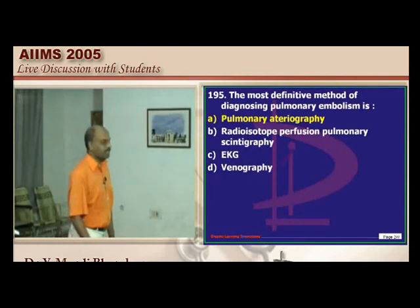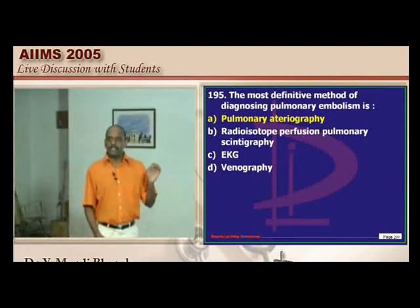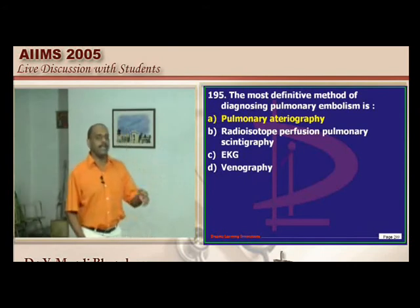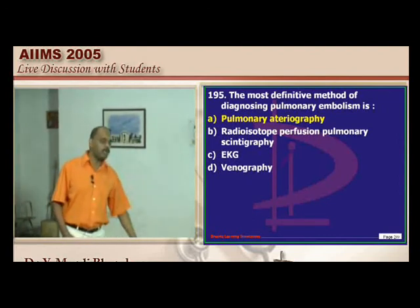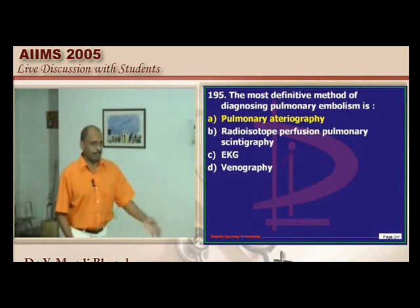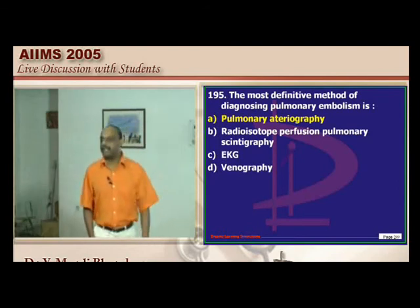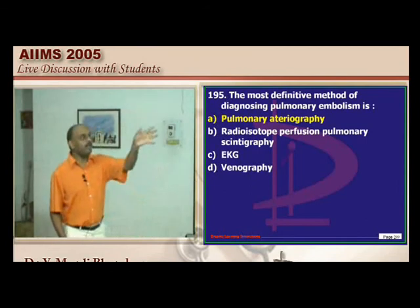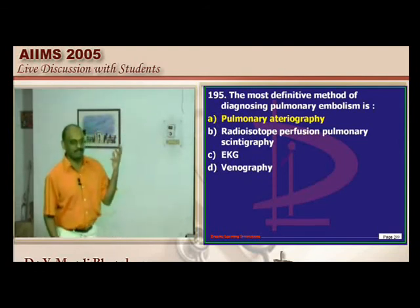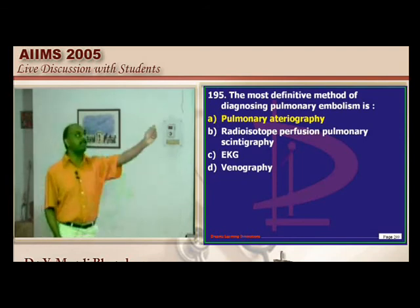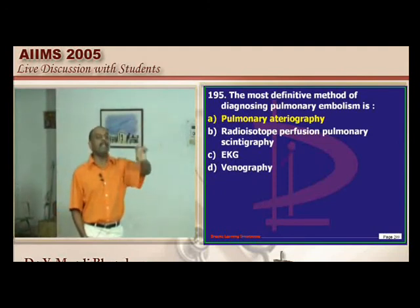For pulmonary embolism diagnosis: suspect it when DVT background is present with sudden shortness of breath, ECG showing S1Q3T3 pattern, ABG showing type 1 respiratory failure with hypoxemia, loud P2, parasternal heave, and right ventricular failure. Ventilation-perfusion scan is a good screening test but only when the chest radiograph is clear — a clear chest radiograph is required first for V/Q scan to be interpretable.